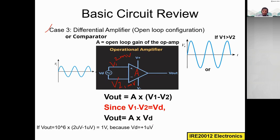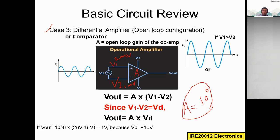Let's take a mathematical example to understand this more clearly. I apply two microvolts to the positive terminal and one microvolt to the negative terminal. The op-amp's open-loop gain — as you can see from the datasheet — is typically 10^5 or 10^6. Let's say 10^6. Using the formula V_out = A × (V1 - V2): that is 10^6 multiplied by (2 µV − 1 µV), and the difference is one microvolt, which equals 1 × 10^−6.